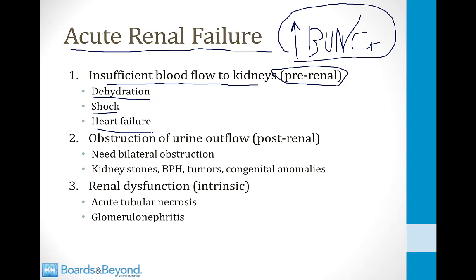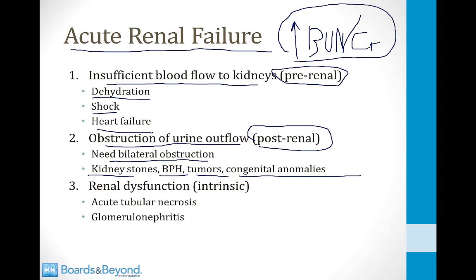The next type is post-renal failure, caused by obstruction of urine outflow. For this to occur, you need bilateral obstruction — if just one kidney is obstructed, the other can usually compensate. This happens with bilateral kidney stones, prostatic hypertrophy in men, tumors, and some congenital abnormalities.